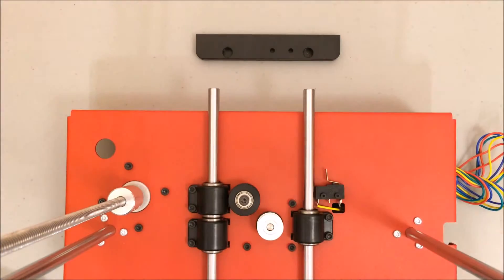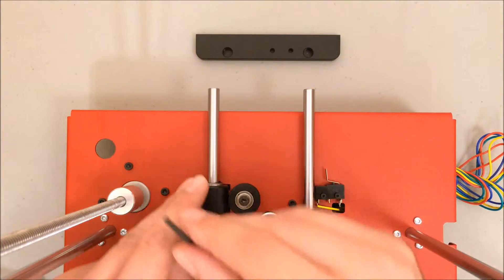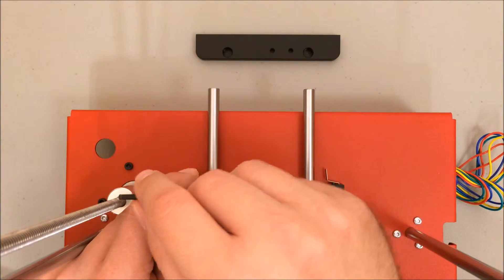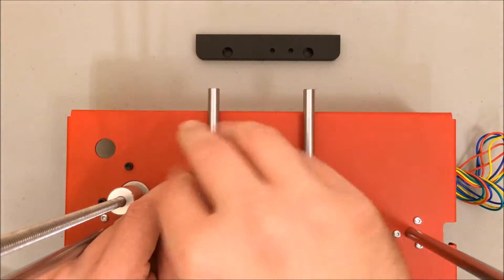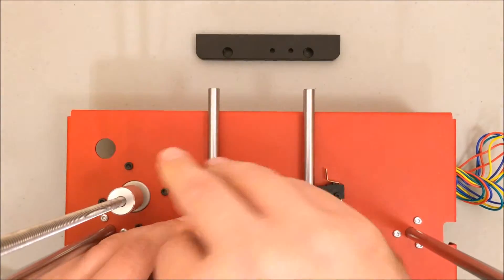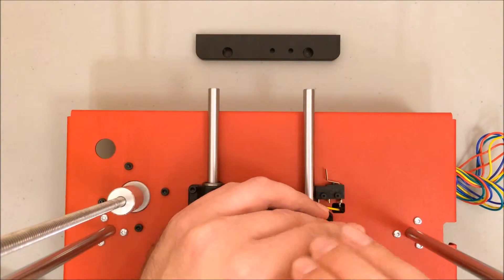Before I attach the back rod end, I'm actually going to loosen all the screws on the bearing clamps so allow the rods to flex a little bit. That way it's easier for me to line up the back rod end. I'm only loosening each screw about a half a turn and it really doesn't take much more than that.